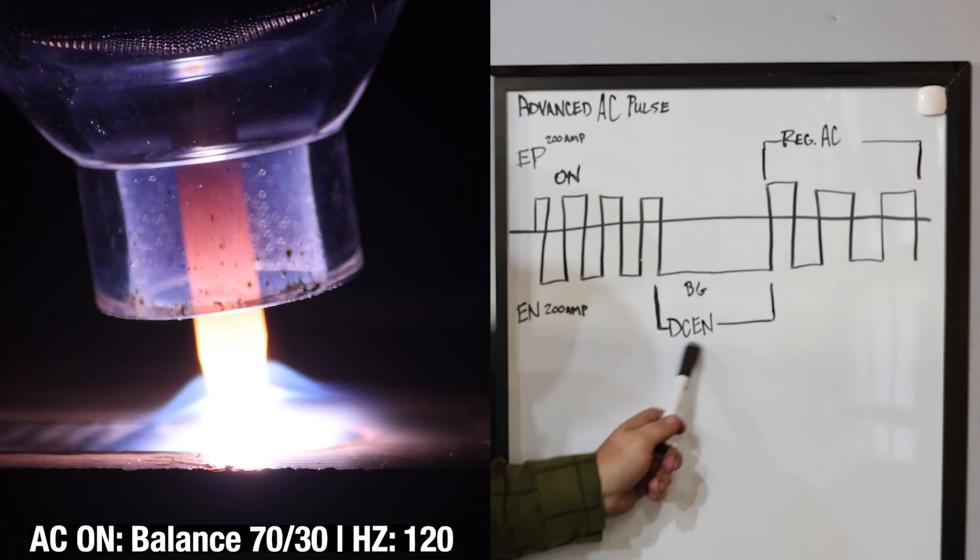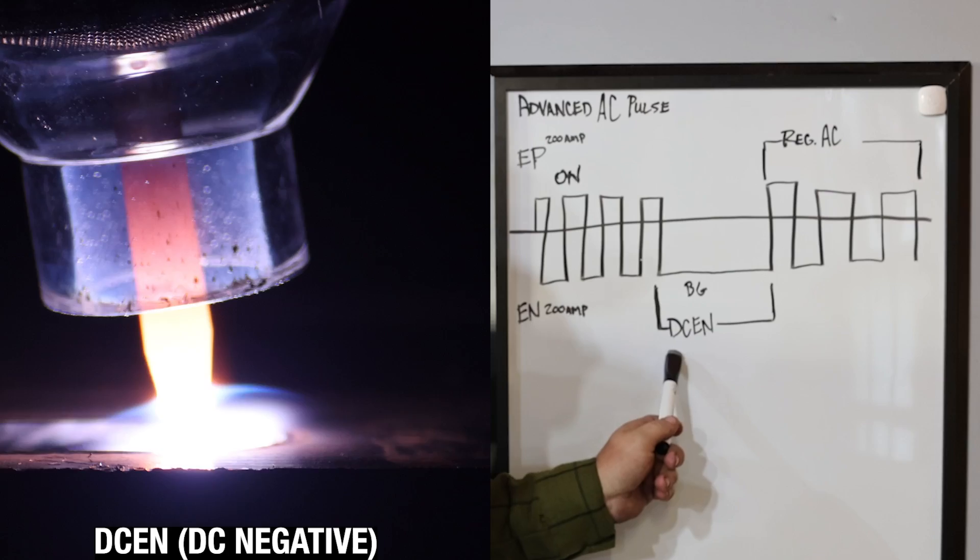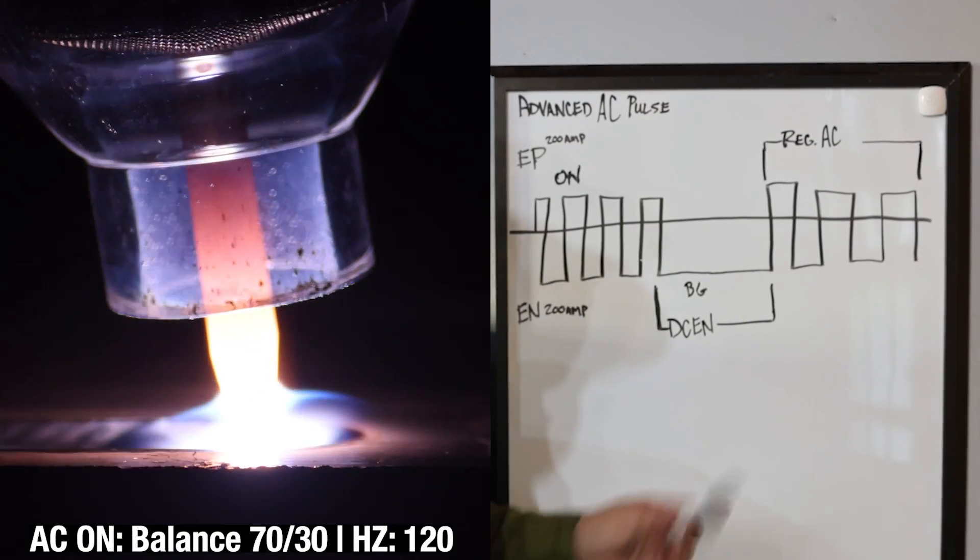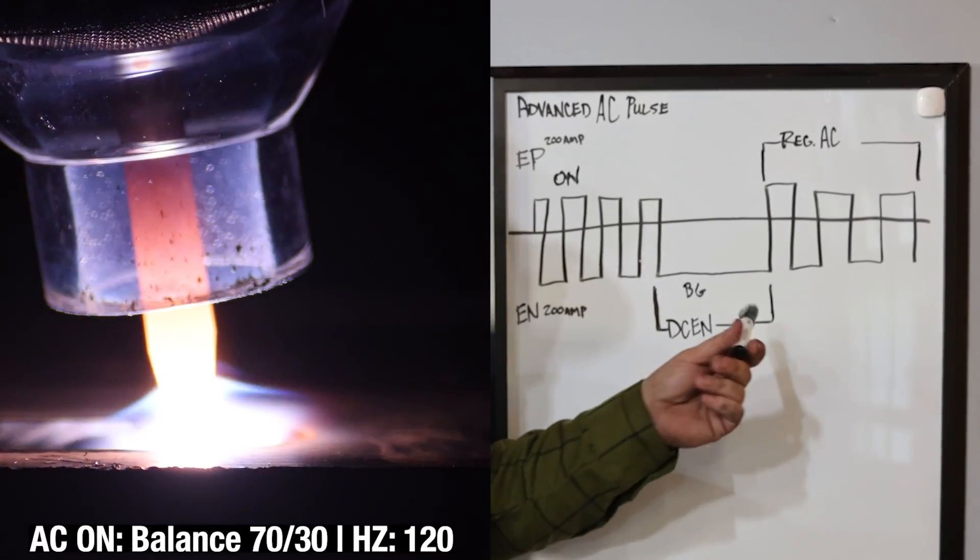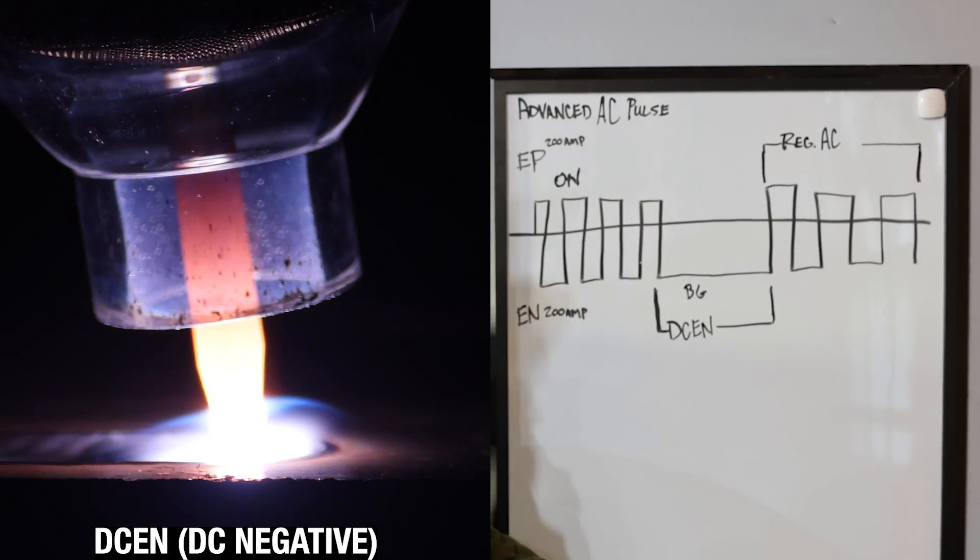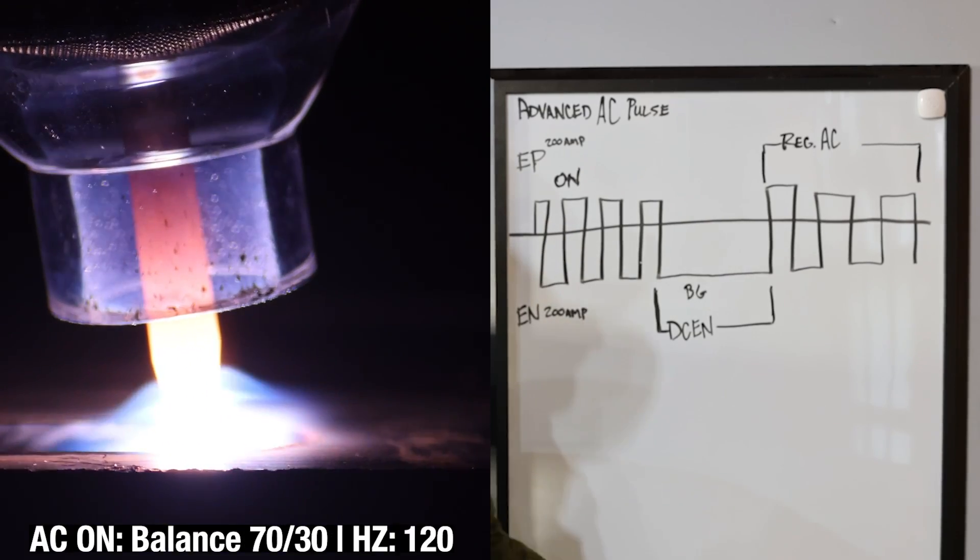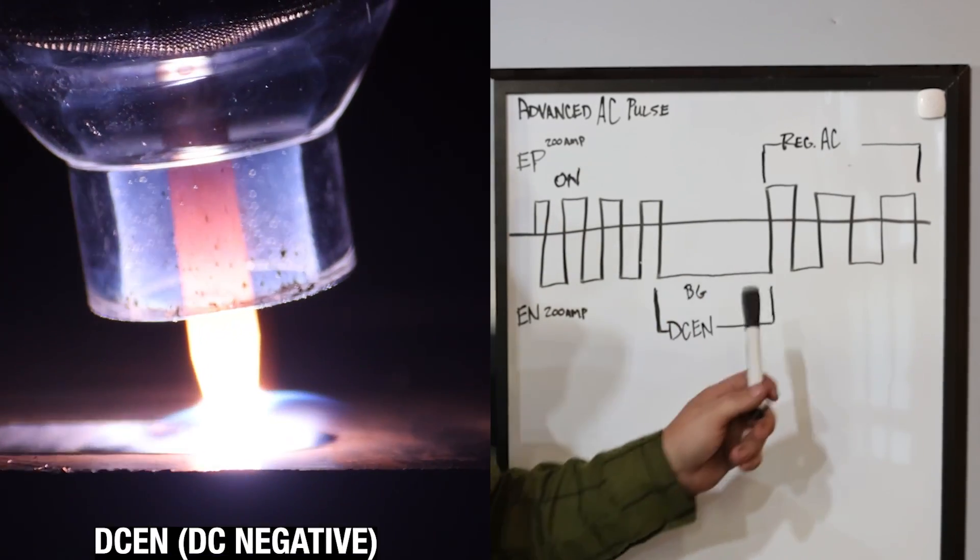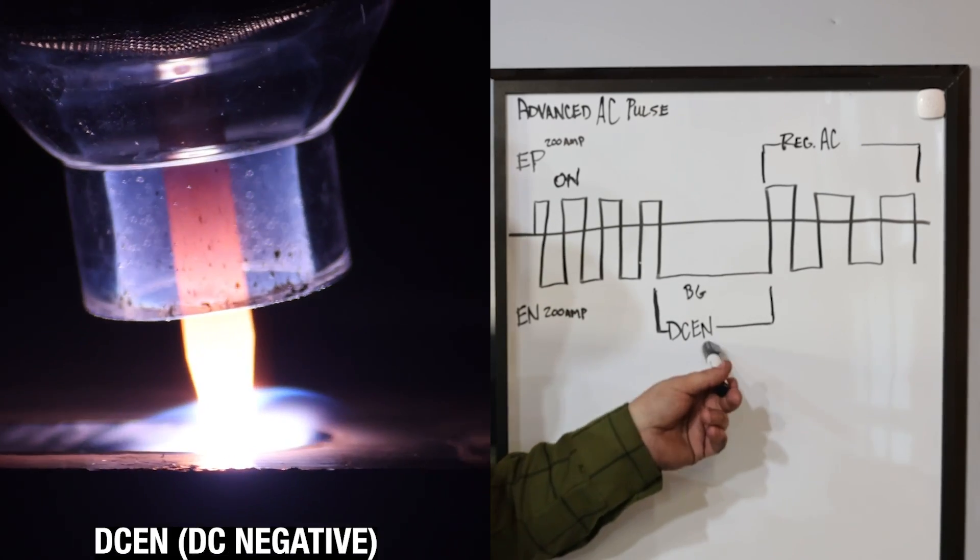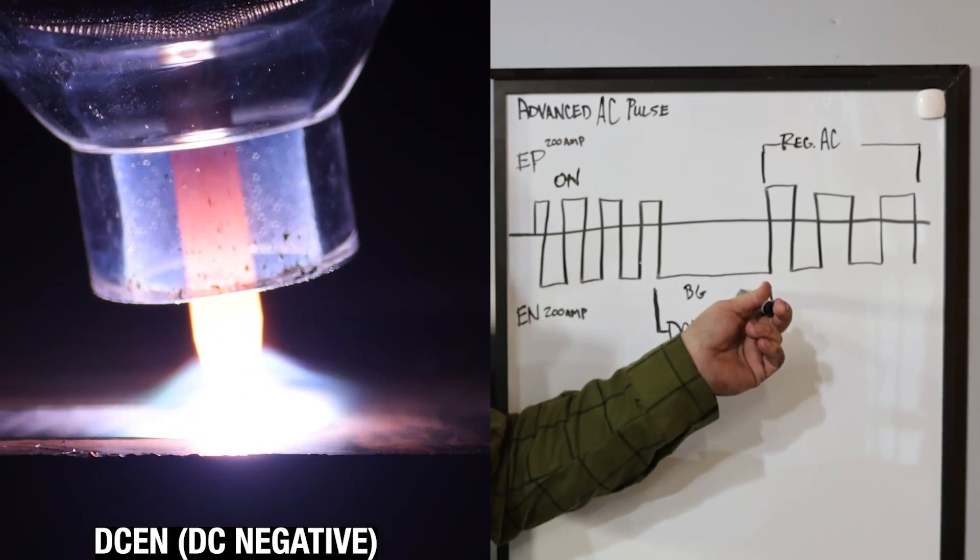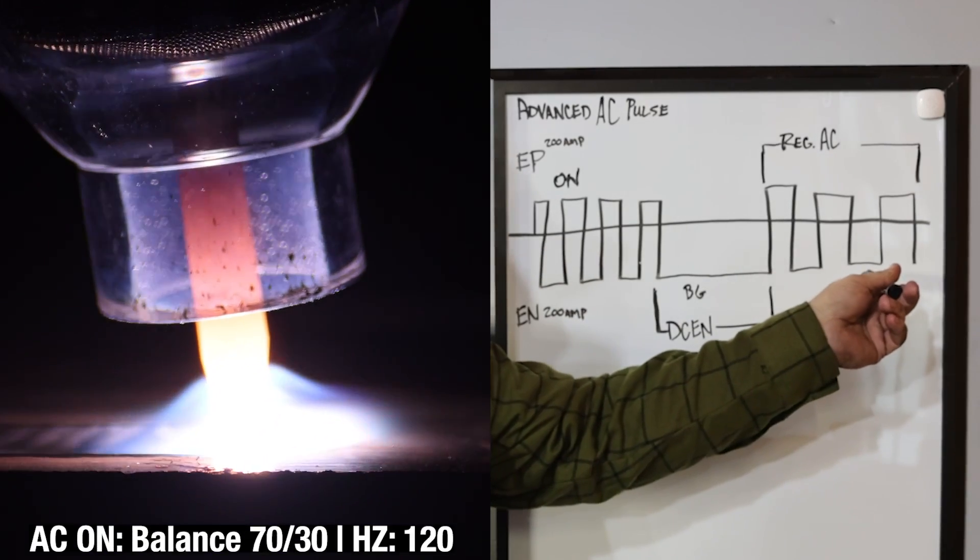Your background amperage then switches to DC electrode negative, which is straight DC like you're welding stainless or mild steel. Now most of the time, if you're running DC electrode negative on aluminum, you need to use a helium mix or else it's super dirty. And it's still a really fast and dirty process. But you get a lot more penetration on DC electrode negative. So then after you come off your DC electrode negative, it goes back to your regular AC waveform.